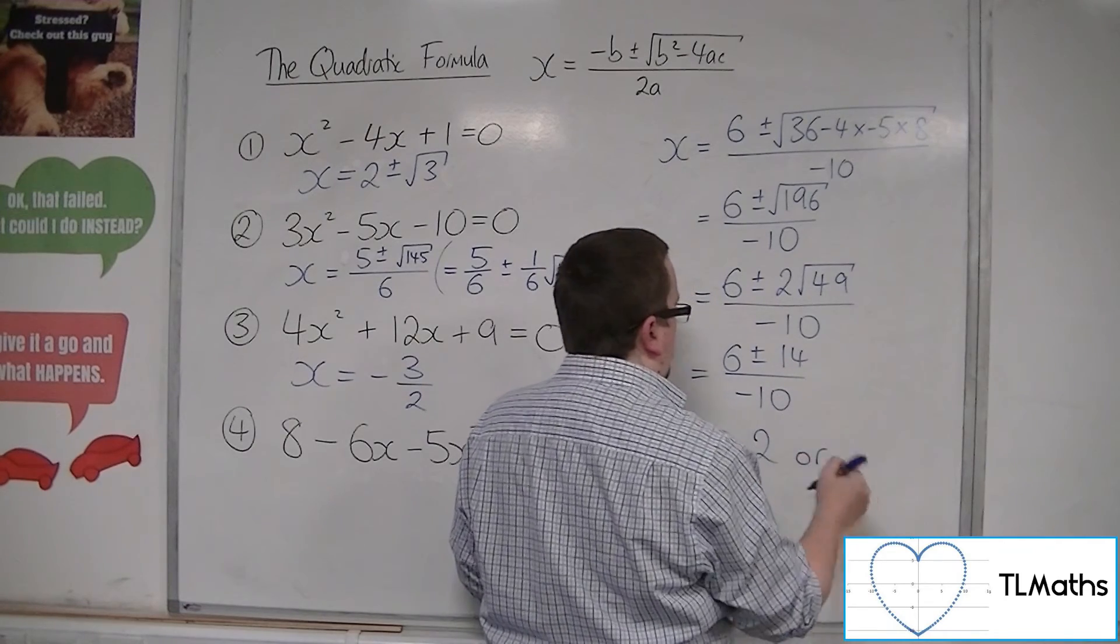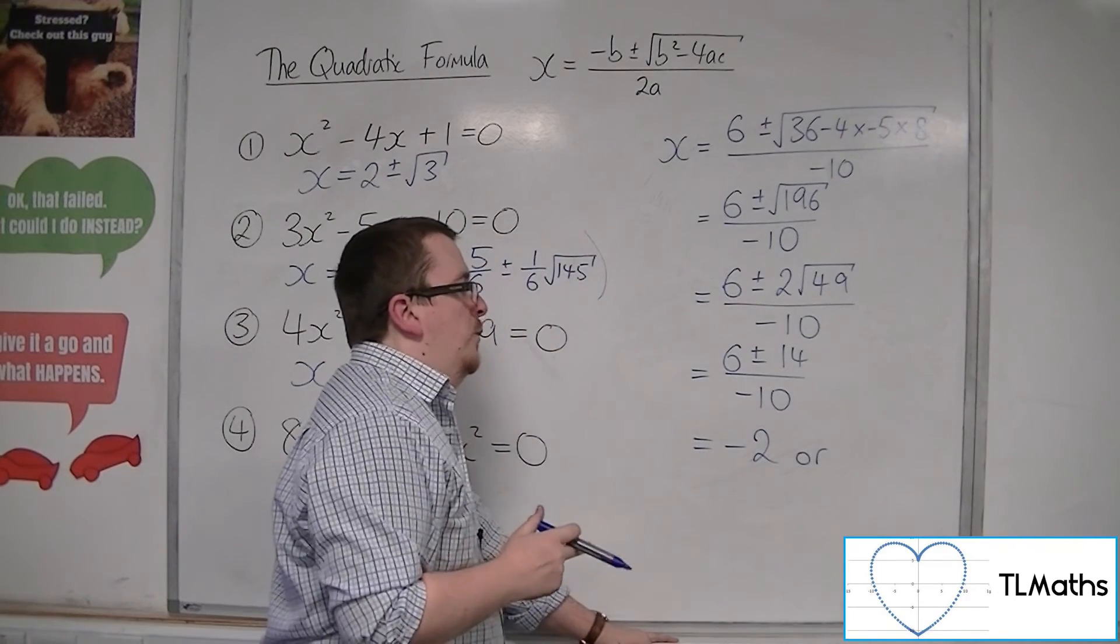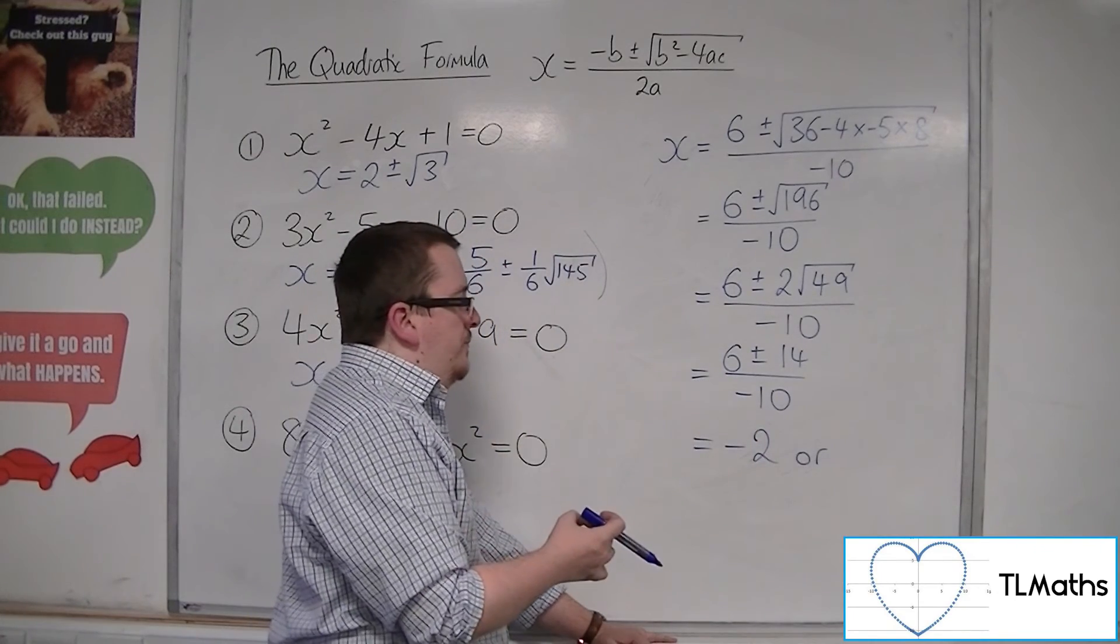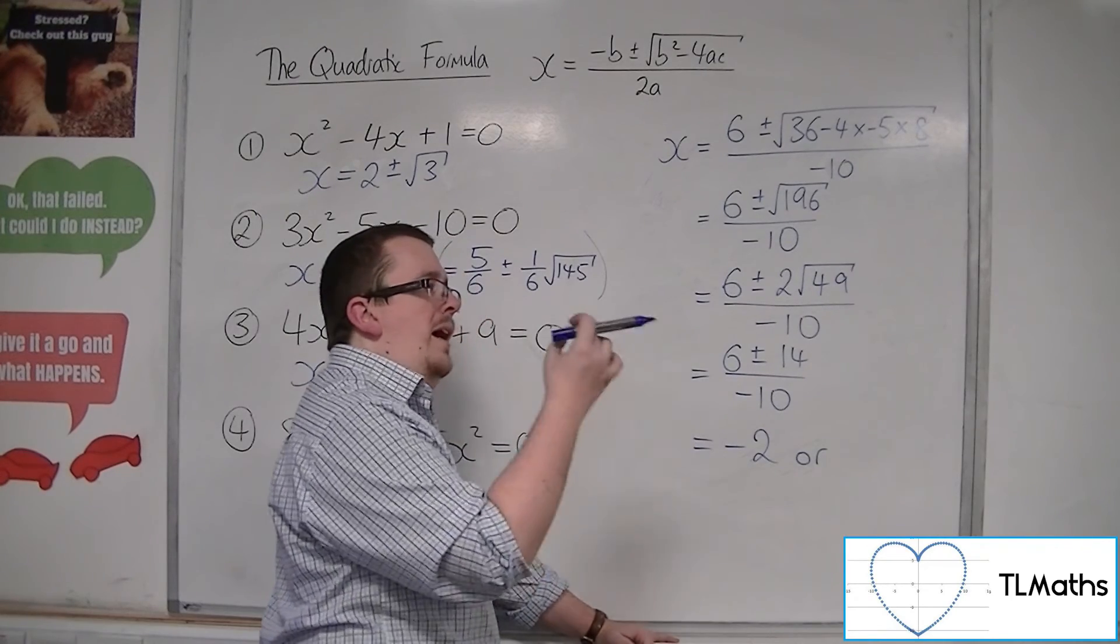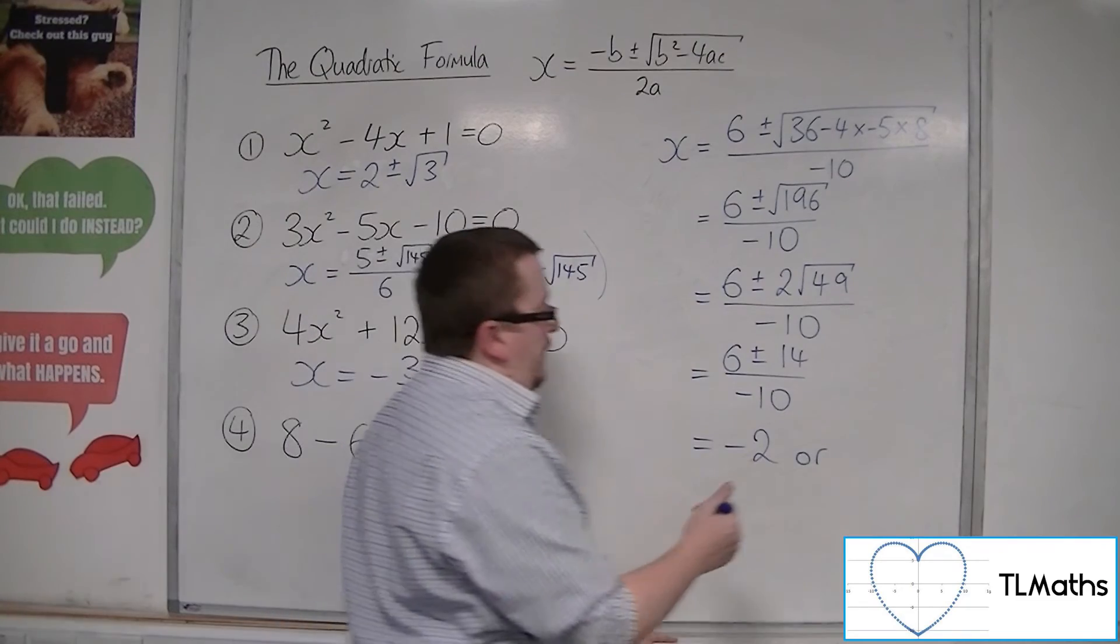Or 6 take away 14, which is minus 8, divided by minus 10, so 8 tenths or 4 fifths.